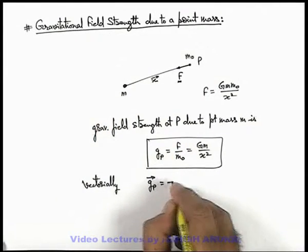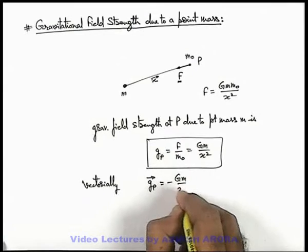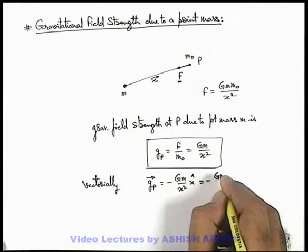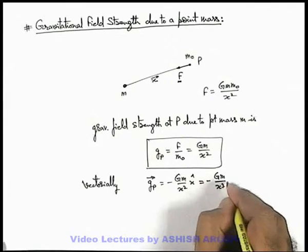So it is written as negative of Gm by x square x cap, or it can be written as negative of Gm by x cube into x vector.